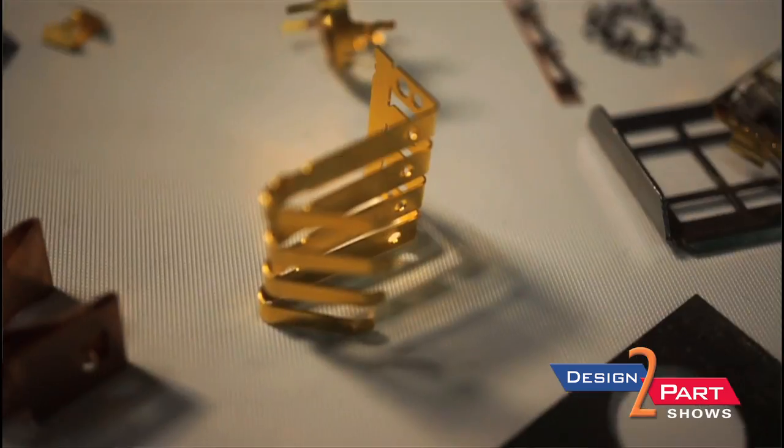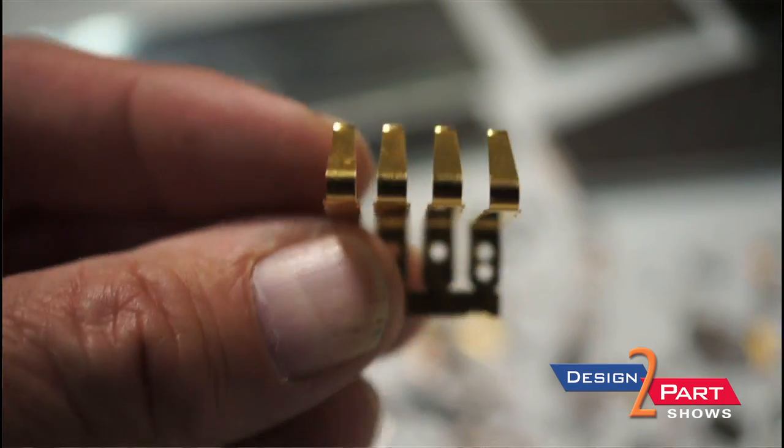Very common application for etching and forming are battery contacts. This is beryllium copper. Once beryllium copper is heat treated, it's the best shape retention metal known to man.